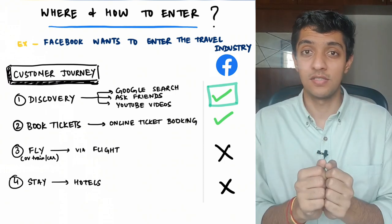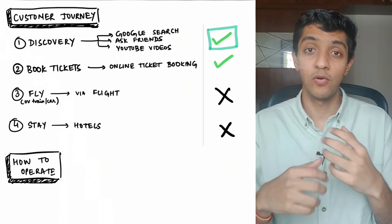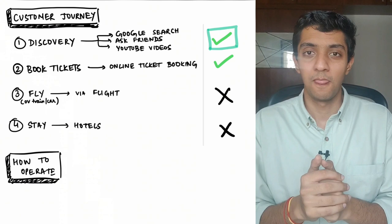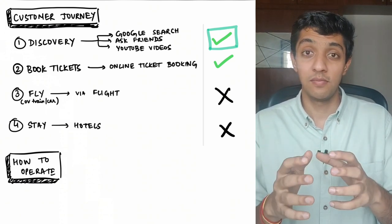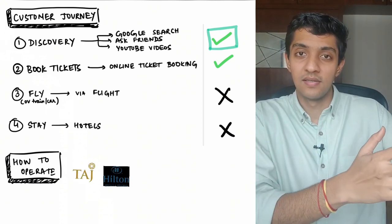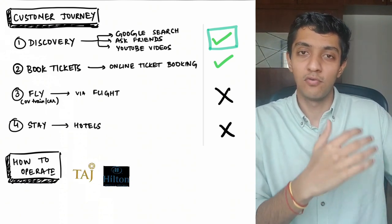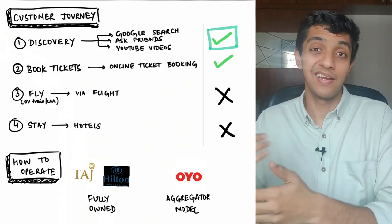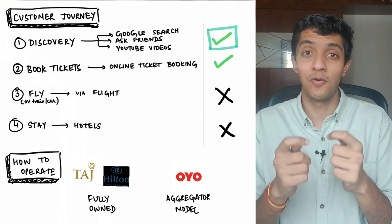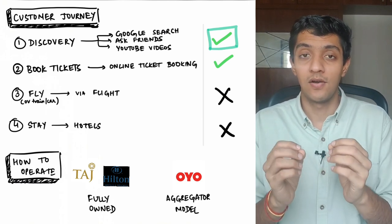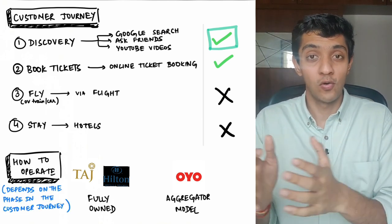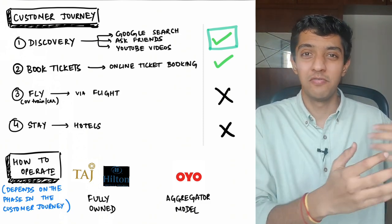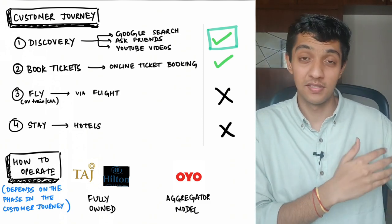For the second part of the question — how do you really want to enter and play here — think about this: if you're in the hotel business, you have a few options. You could be like Taj, Hilton, and Marriott, which are fully owned hotels, or you could be like Oyo, which is more of an aggregator model. The business model you want to pick would really depend on the phase you're targeting. For hotels, the aggregator or fully owned model works. But for another phase, it could be very different models that you'll have to look at.